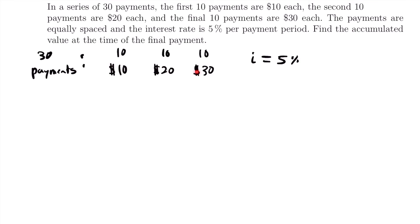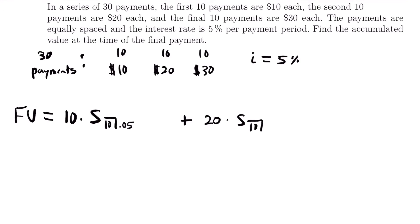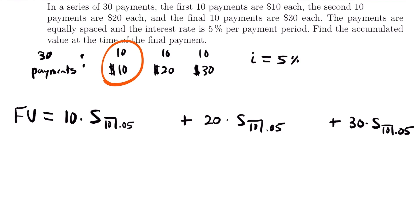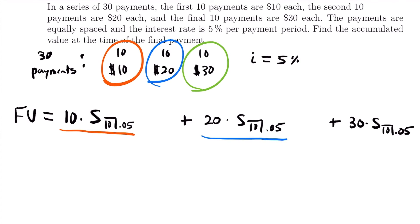The future value will have three terms. First, 10 times S_{10|0.05} for the 10 payments of $10 at the end of each of those first 10 periods. Then we add 20 times S_{10|0.05} for the second 10 payments of $20. Then we add 30 times S_{10|0.05} for the final 10 payments of $30. But the equation is not completely set up — just like in the last problem, I left a space because we're missing something.